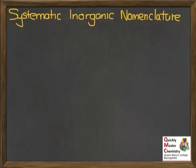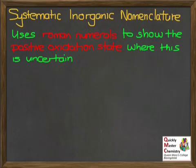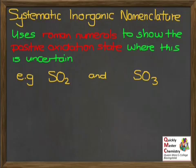Another application of oxidation states is what's called systematic inorganic nomenclature, which is just a fancy way of saying naming inorganic compounds using rules. We're going to use Roman numerals to show positive oxidation states in the name of a compound where the oxidation state might otherwise be uncertain. We'll look at some examples. We'll compare SO2 and SO3 — you might recognise these as acid rain-causing pollutants from fossil fuel use. They're both sulphur oxides, and in the past might have been called sulphur dioxide and sulphur trioxide, but the modern systematic naming uses Roman numerals to show oxidation state.